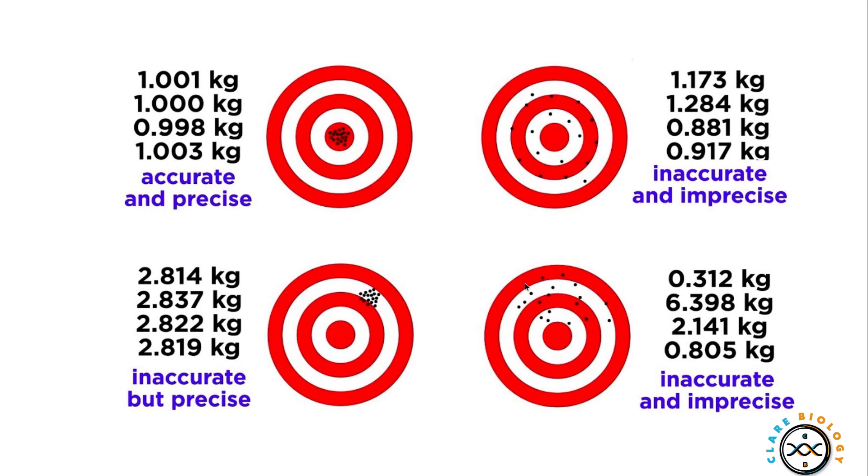This just shows you some other examples of where I can combine accuracy and precision. They're not the same thing. This one up here is accurate and precise. Accurate because it represents that true value, it's measured the true value, and it's precise because all of those measurements are really close together. And this one here is inaccurate because it's not measuring close to that true value. However, they are precise because all of those values are very close together. And these two just represent inaccurate and imprecise.